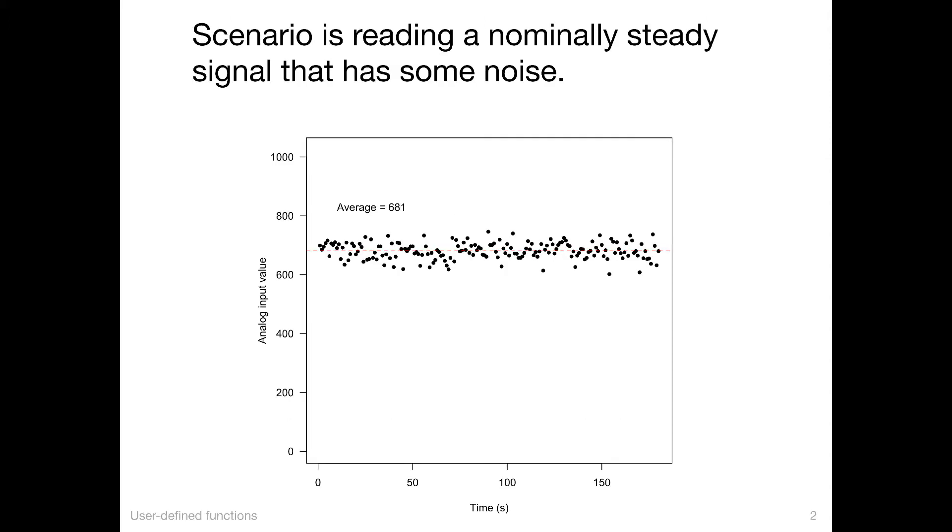This plot shows how a signal might be coming in from a sensor. Each dot represents a measurement. The horizontal axis is time, and this simulates a measurement over the course of, say, three minutes, each reading taken once a second. The average is represented by the dashed horizontal line, and for this particular set of numbers, the average is 681.